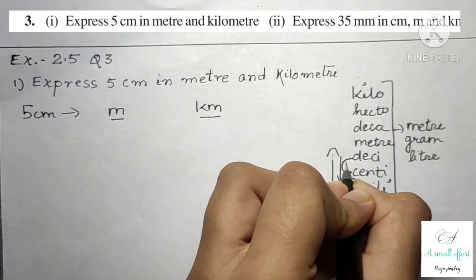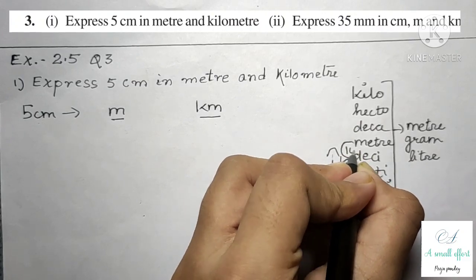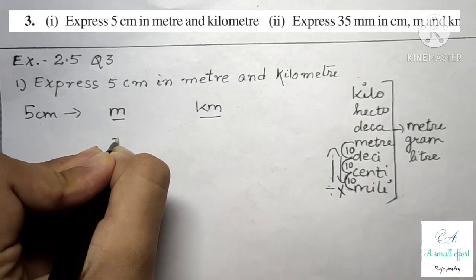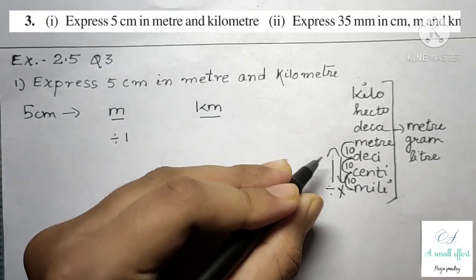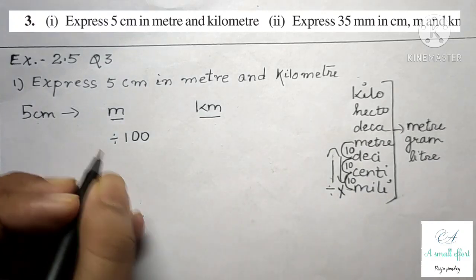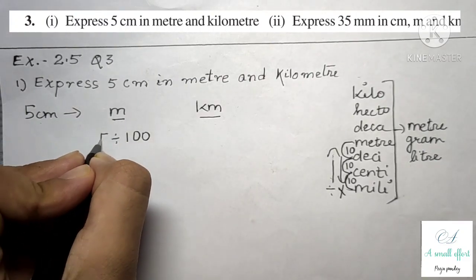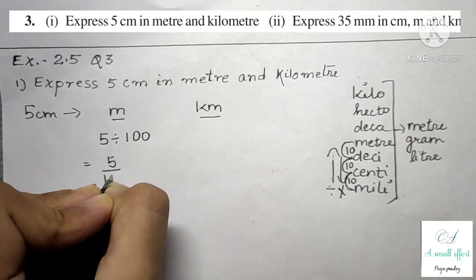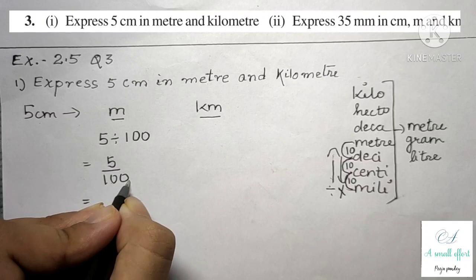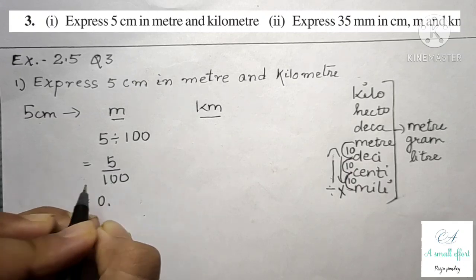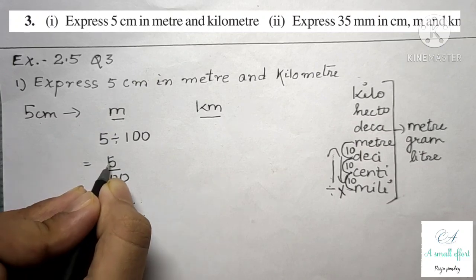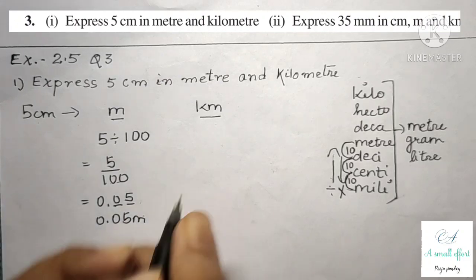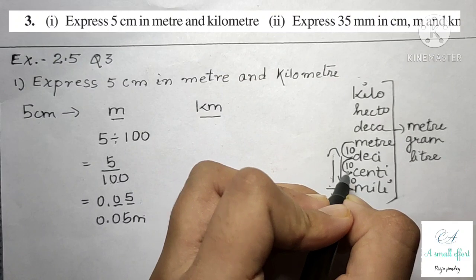From centimeter to decimeter is 10, and decimeter to meter is 10. As we are going up, we divide. Two tens means two zeros, which is 100. So 5 divided by 100 — there are two zeros, two blanks, but we have only one digit, so we put zero here. This means 0.05 meter.